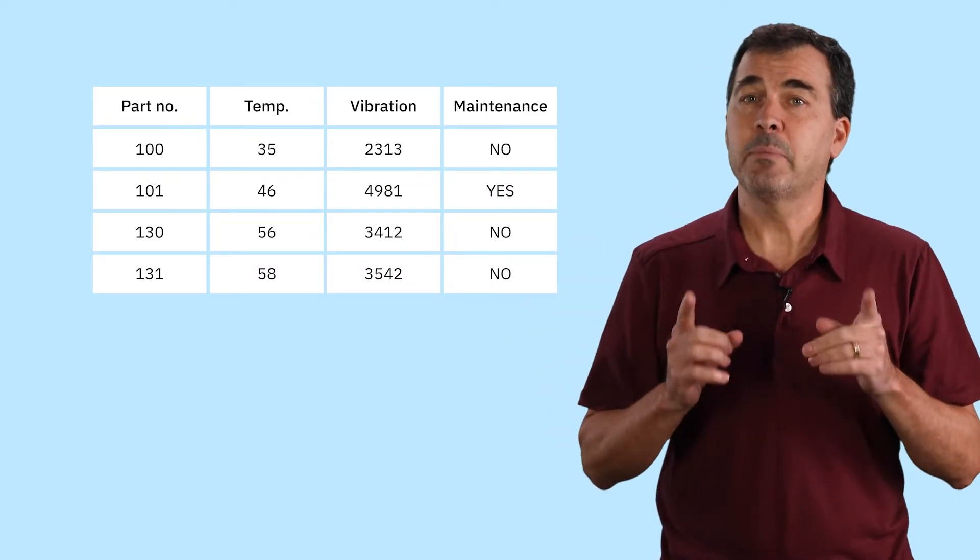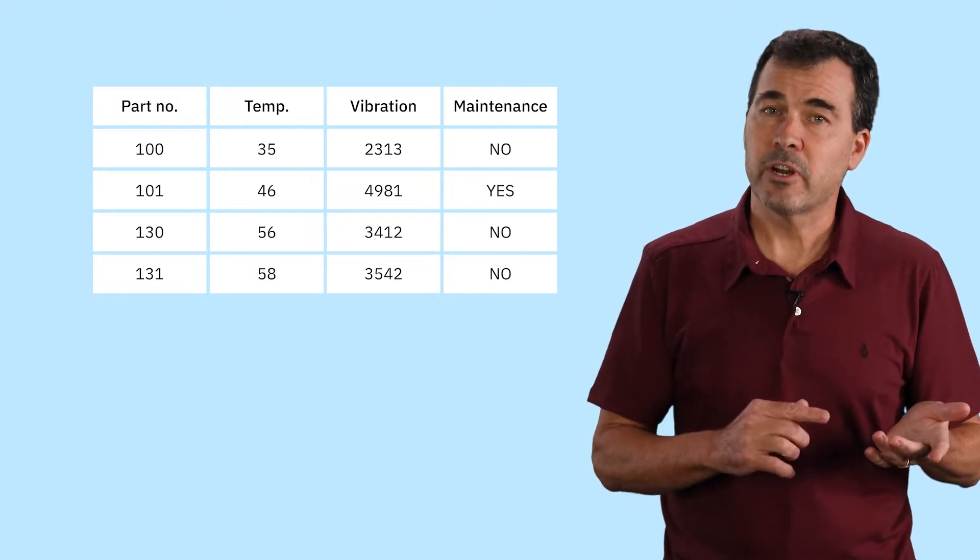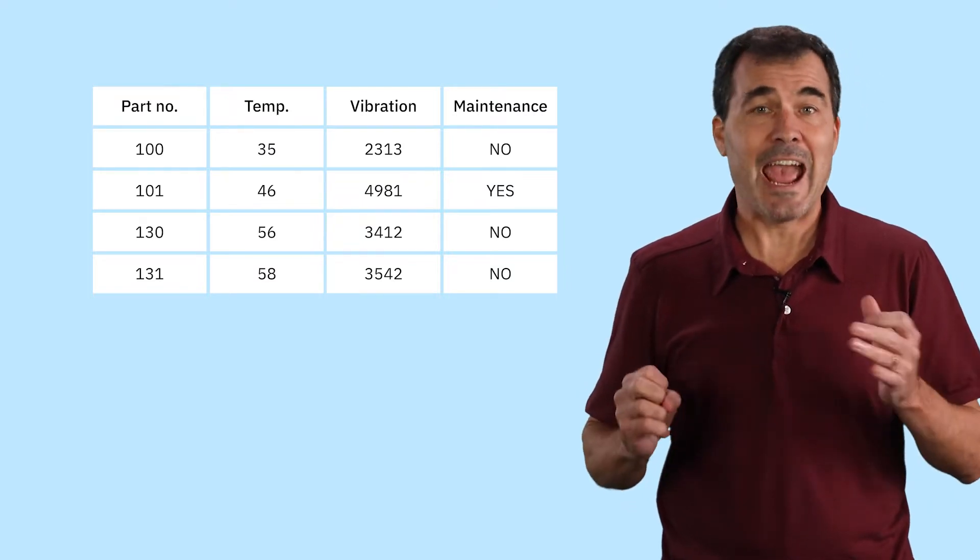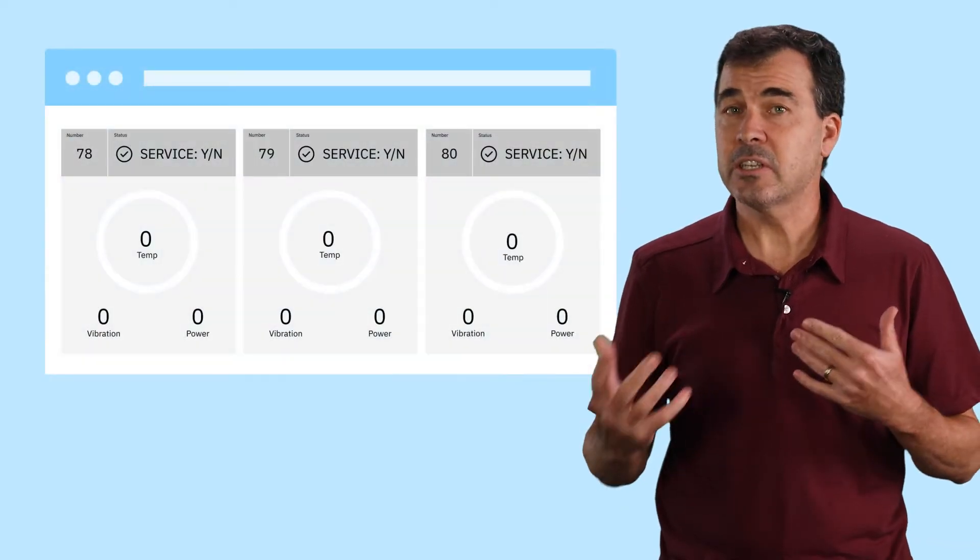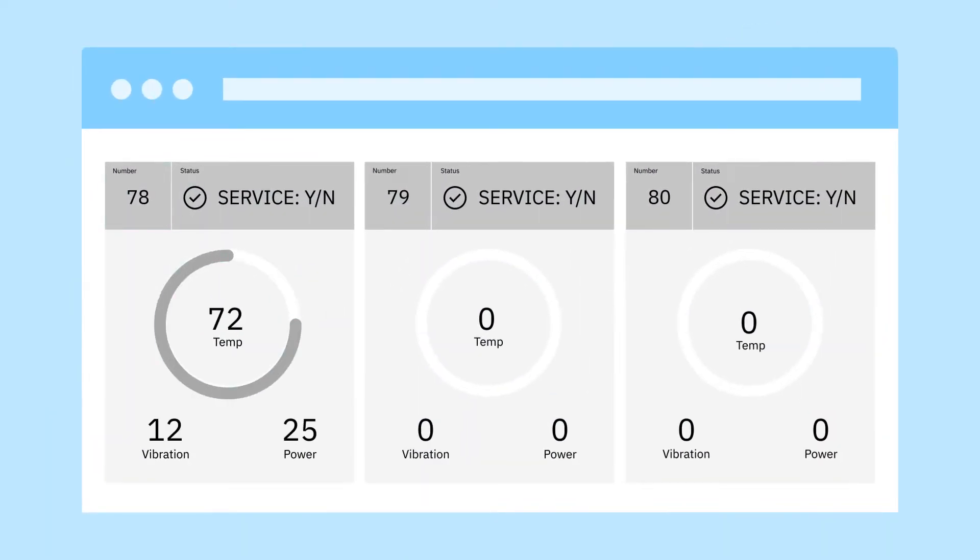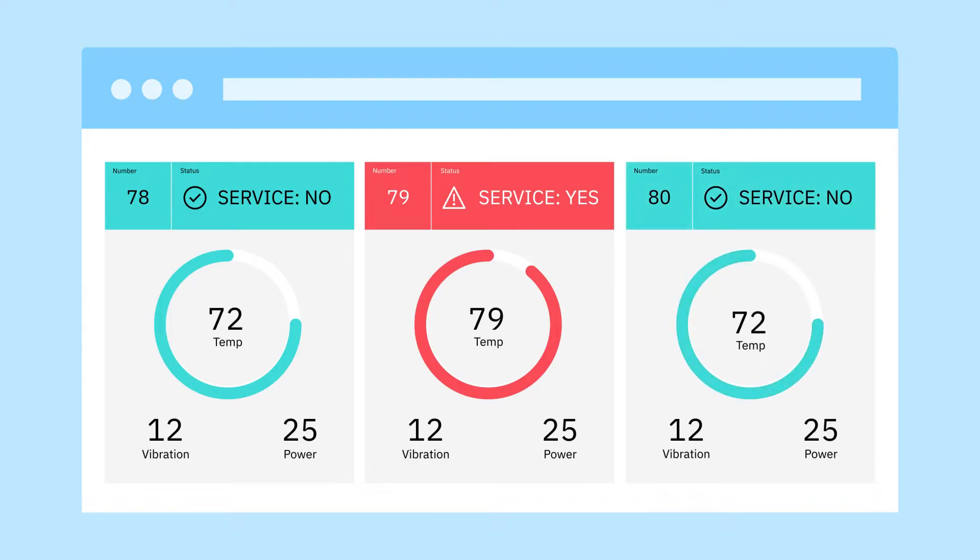We provide labeled data, and supervised learning produces a model which can accurately predict that label. Now, when the prediction is something like yes or no, maintenance needed or not needed, we call that binary classification.